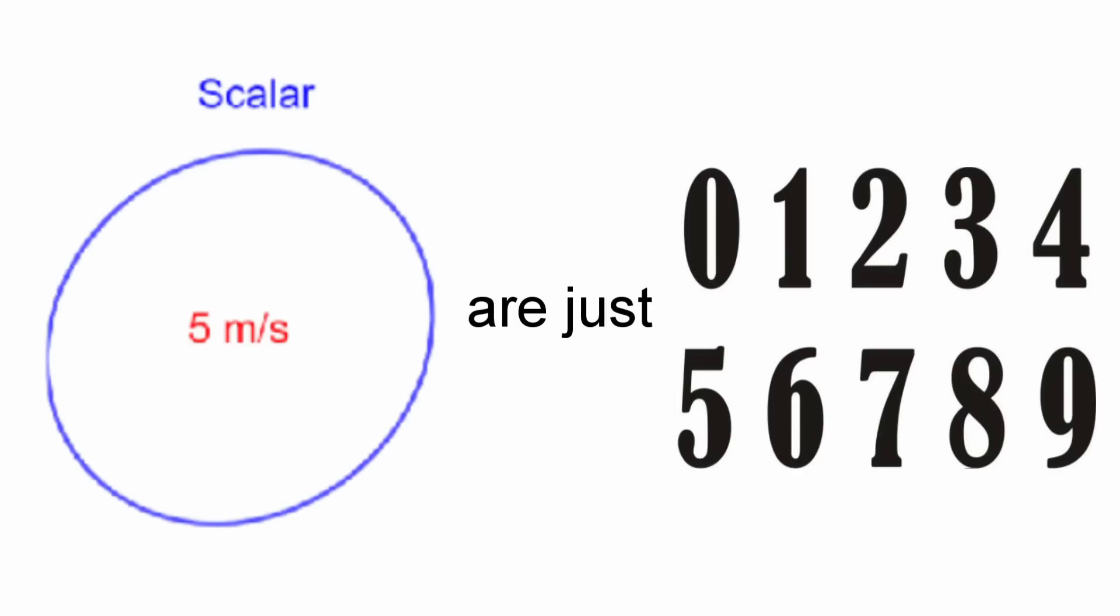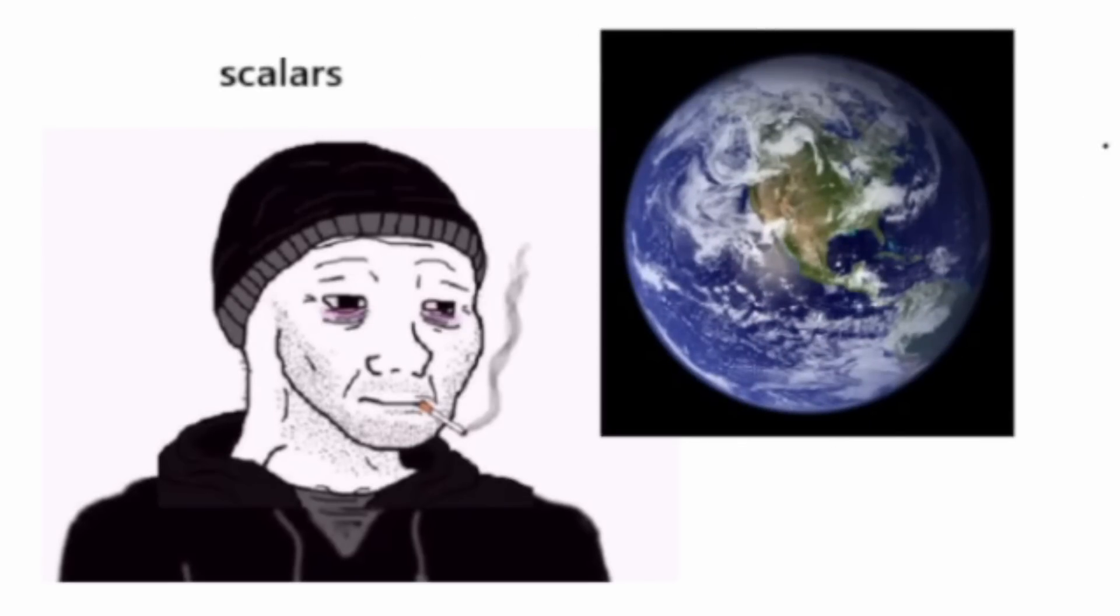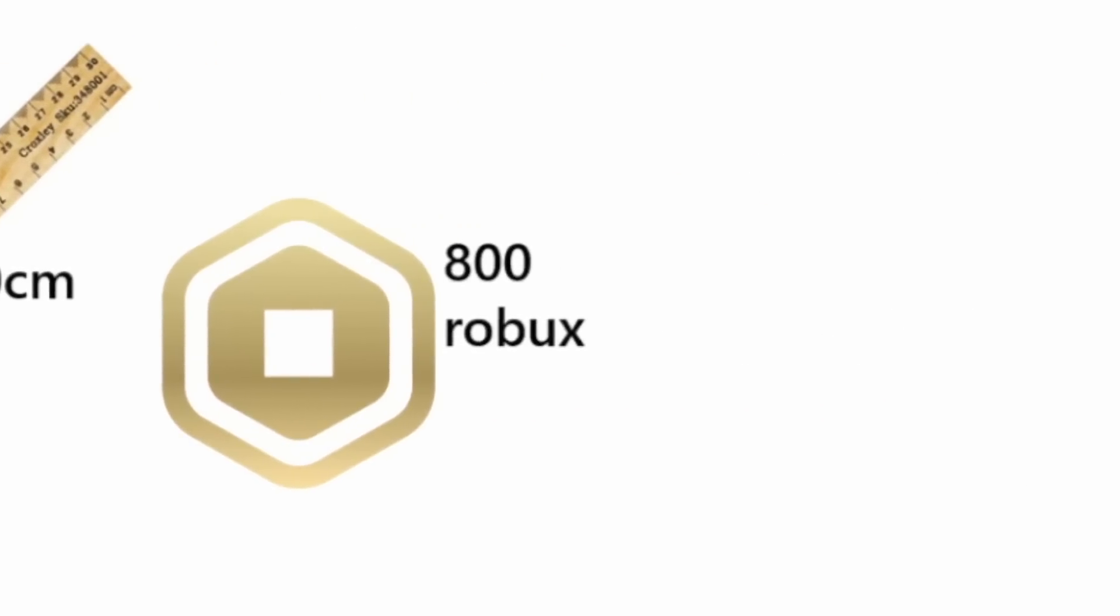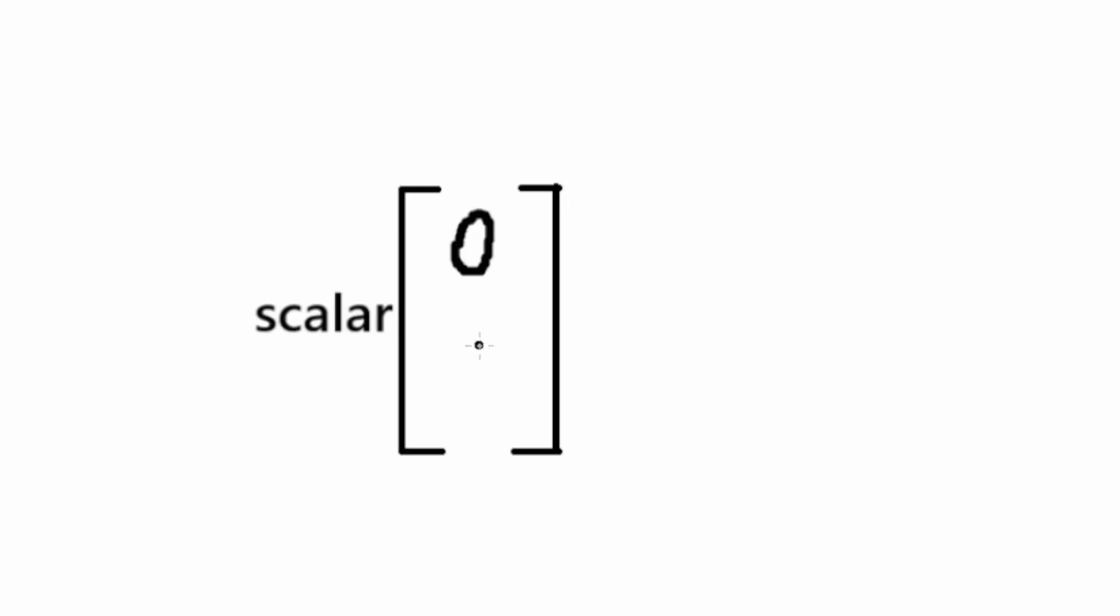Scalars are just numbers. They exist by themselves in the real world with a unit of measurement such as 10 centimeters, 800 Robux, 5 chicken jockeys. These are all scalars. They can also be used as the coefficient of a vector.